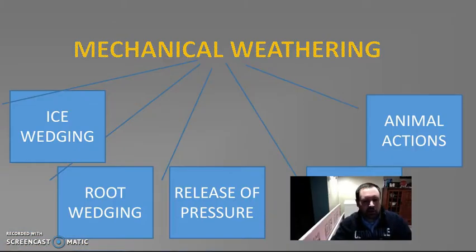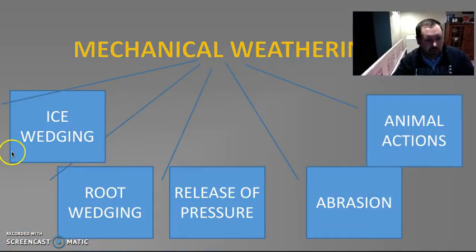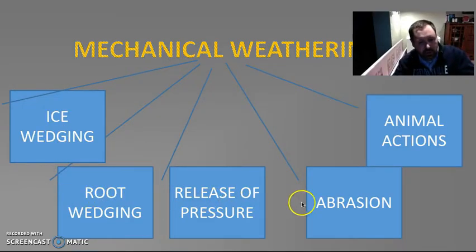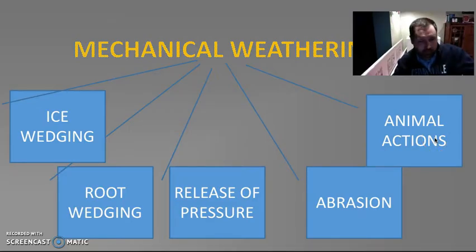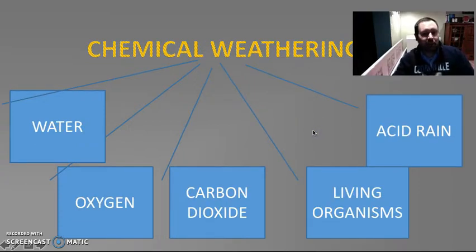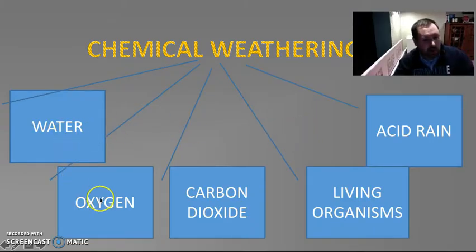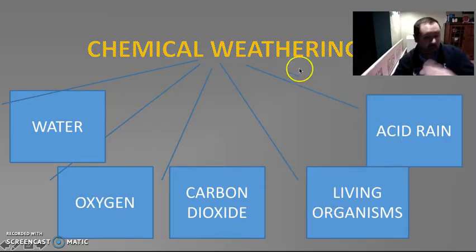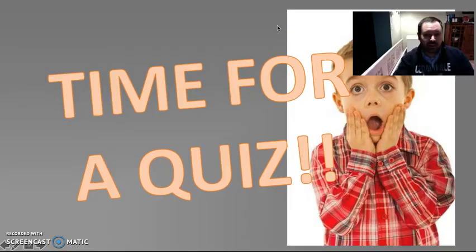So when it comes to mechanical weathering, we have ice wedging, root wedging, release of pressure, abrasion, and animal action — five kinds of mechanical weathering. Also, when it comes to chemical weathering, we've got five kinds: water, oxygen, carbon dioxide, living organisms, and acid rain. I told you about each one of those things. So now it's time for a quiz!